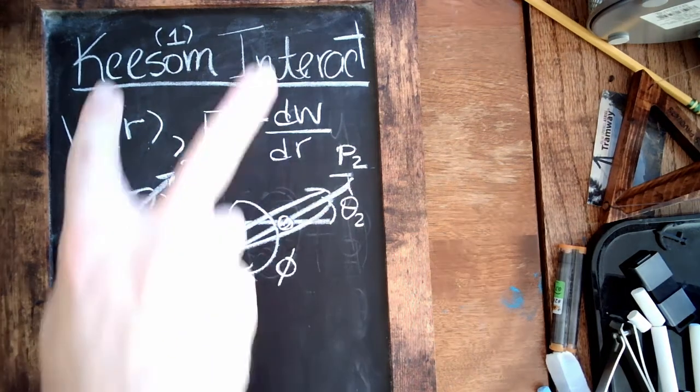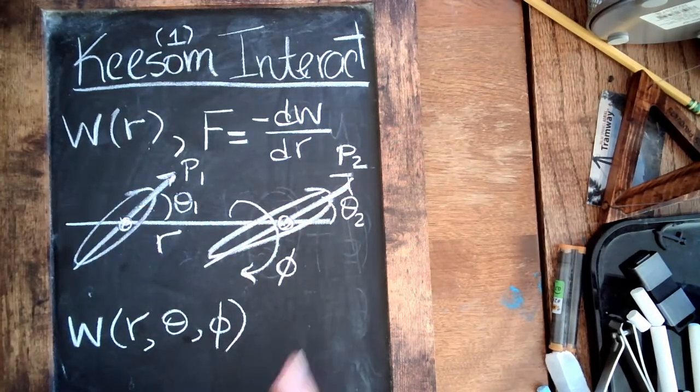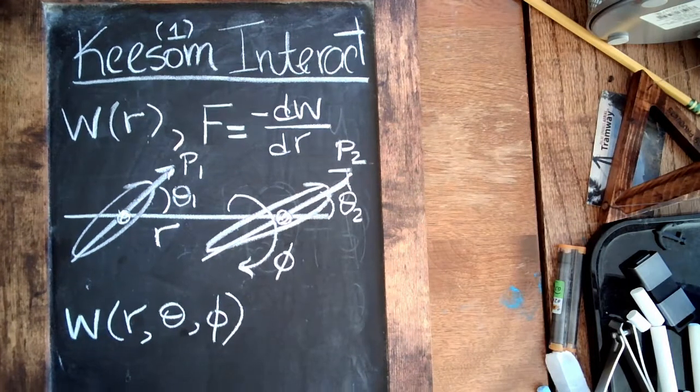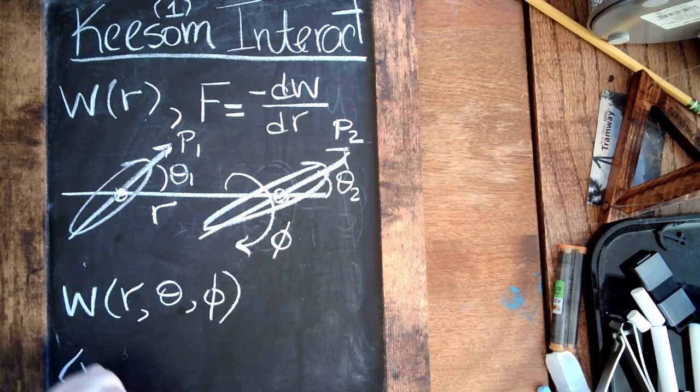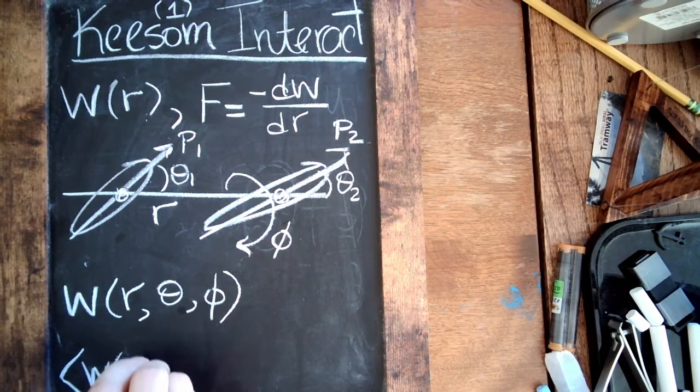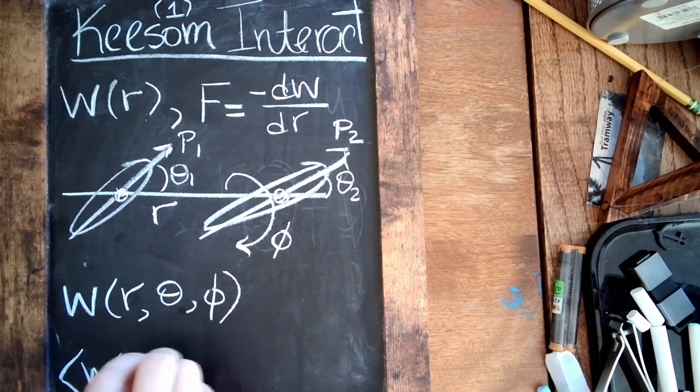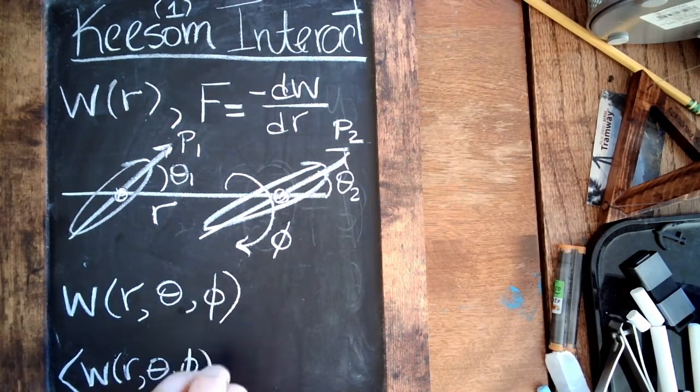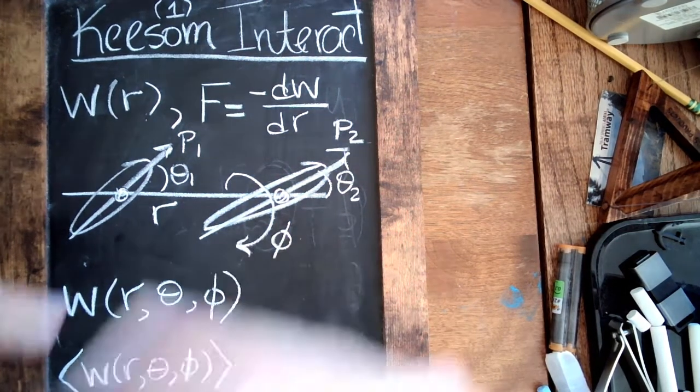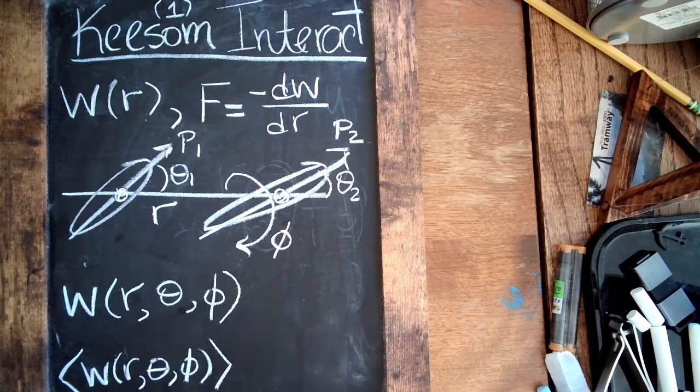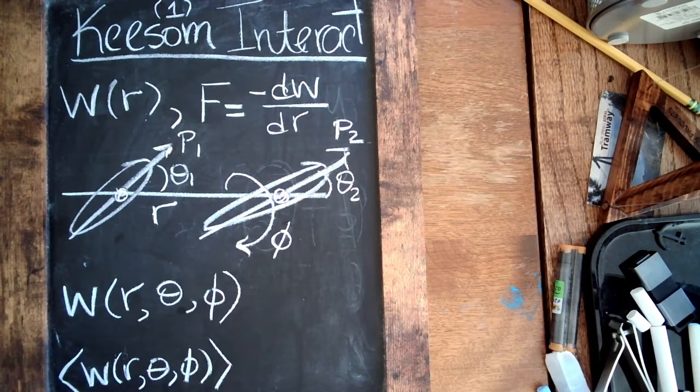But what we want in this Keesom interaction is actually going to be the average over all the angles of this quantity. Because what we're saying is this is a relatively weak interaction; both of the dipoles are free to tumble around and rotate. So the only thing we're going to get left is the average over the angles, and we're going to call that W(r).